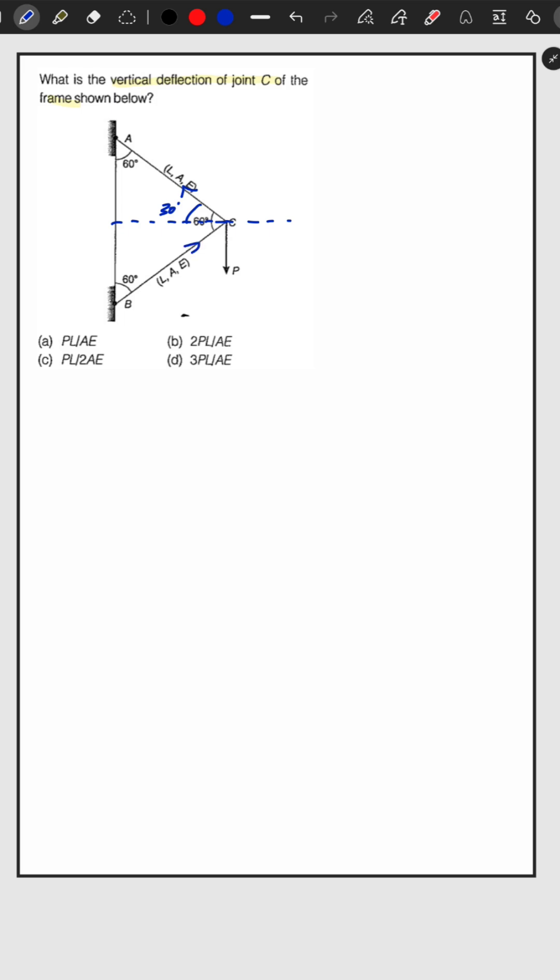So now using equilibrium equation at joint C, summation of Fx equal to zero. So force in member AC is negative PAC cos 30 degrees and plus PBC cos 30 degrees. And as there is no horizontal force at joint C, so it will be zero.